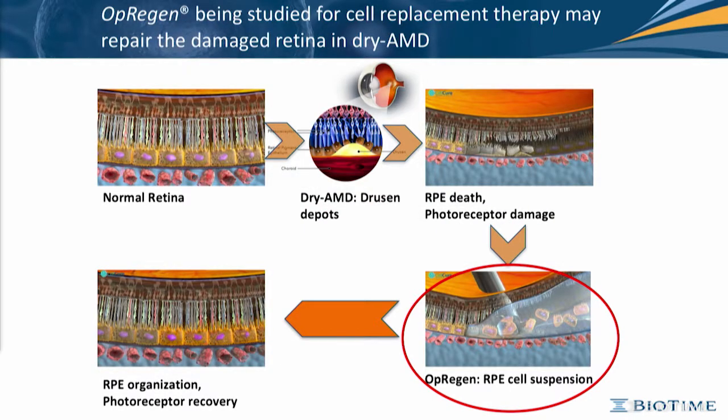Looking at the evolution of dry AMD, we start with the main problem of the accumulation of lipid deposits called drusen, which then lead to the atrophy of the RPE cells and subsequently the photoreceptors. In the lower right you can see the injection of the suspension of RPE cells, and on the left, the restoration of RPE cells that will eventually lead to a restoration of vision.